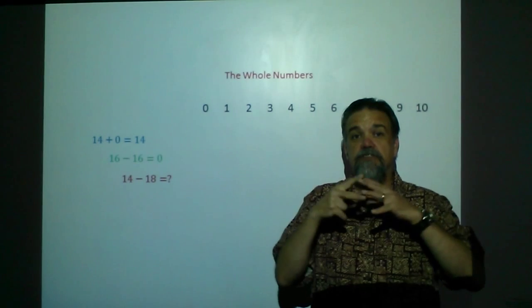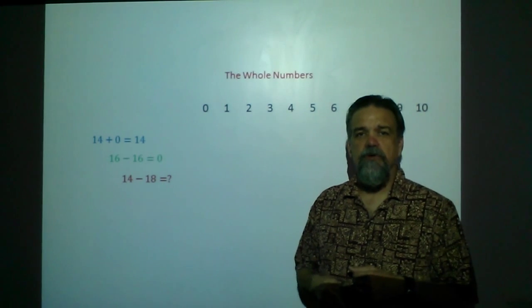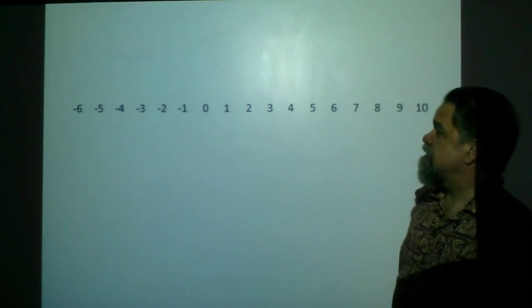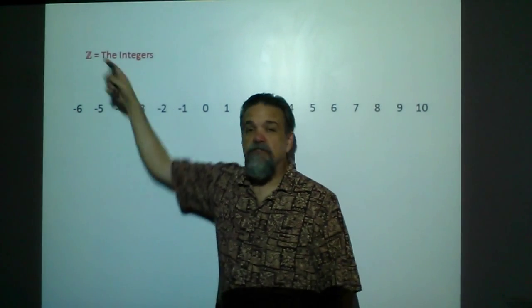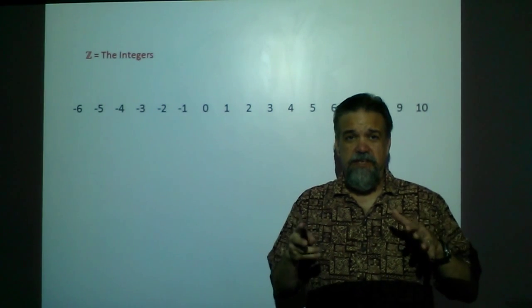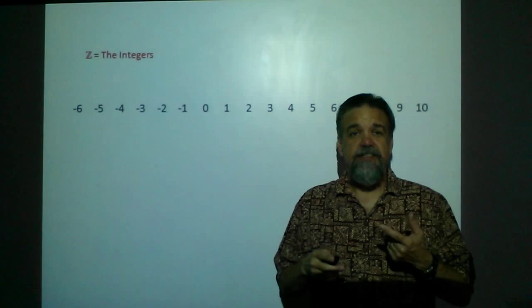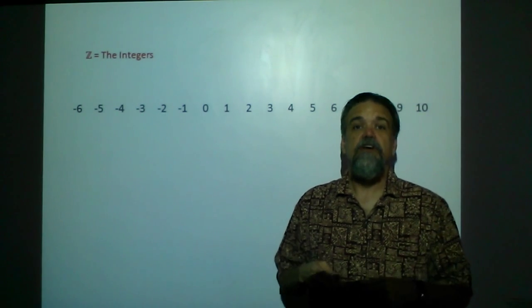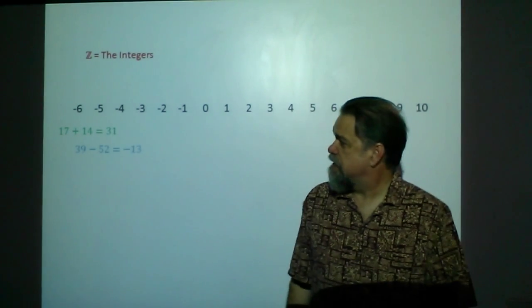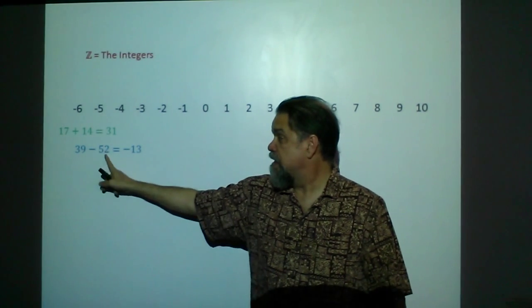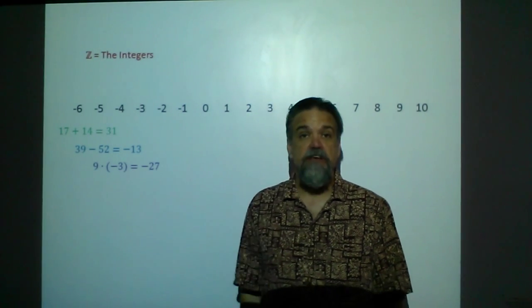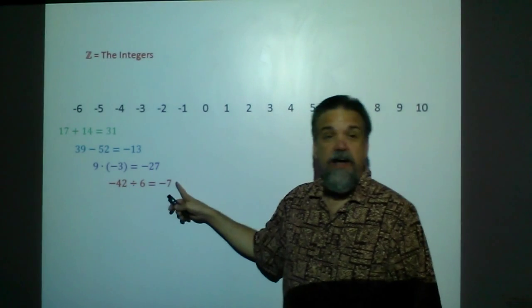So what do we have to do? Again, we have to expand our idea of what a number is, and this time we're going to include negative numbers. So now we have this set we call the integers, and we use the letter Z to abbreviate the integers — not because Z stands for integers, but because the word Zahlen in German, which means to count or integers, starts with the letter Z. So now we can add integers, subtract them, and multiply them.